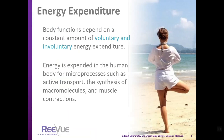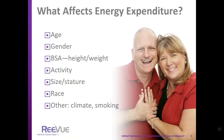Energy expenditure is the sum total of voluntary and involuntary energy expenditure in a day. Energy is expended in the human body for micro processes such as active transport, synthesis of macromolecules, and muscle contractions. What affects energy expenditure?